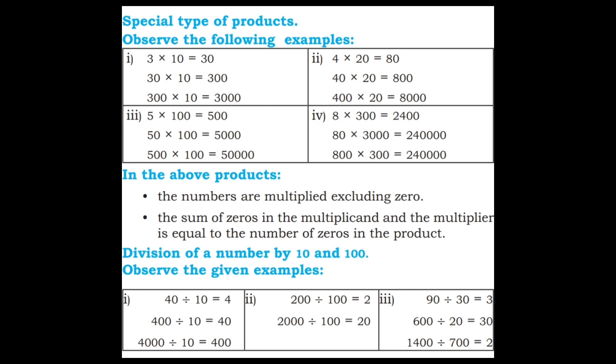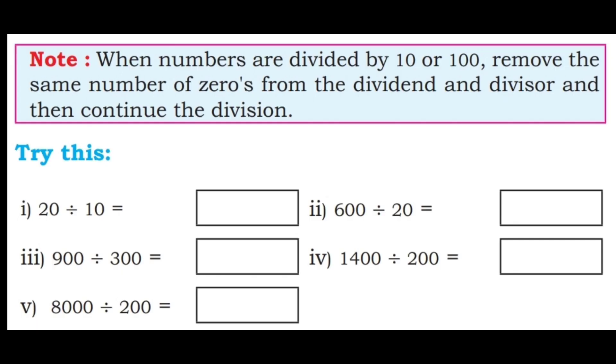Division of a number by 10 and 100. Observe the given examples. 40 divided by 10: 10 fours are 40, so the answer is 4. 400 divided by 10: cancel one zero from both the dividend and divisor, leaving 40 divided by 1, which is 40. Note: when numbers are divided by 10 or 100, remove the same number of zeros from both the dividend and divisor, then continue the division.